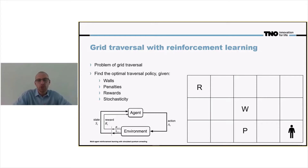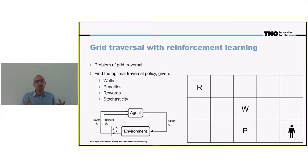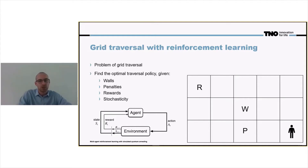We can even introduce some stochasticity. For instance, the penalty term only gives a penalty in certain cases or only with a certain probability, or with a certain probability you take the action that you intended to do, and with some other probability you take another action.